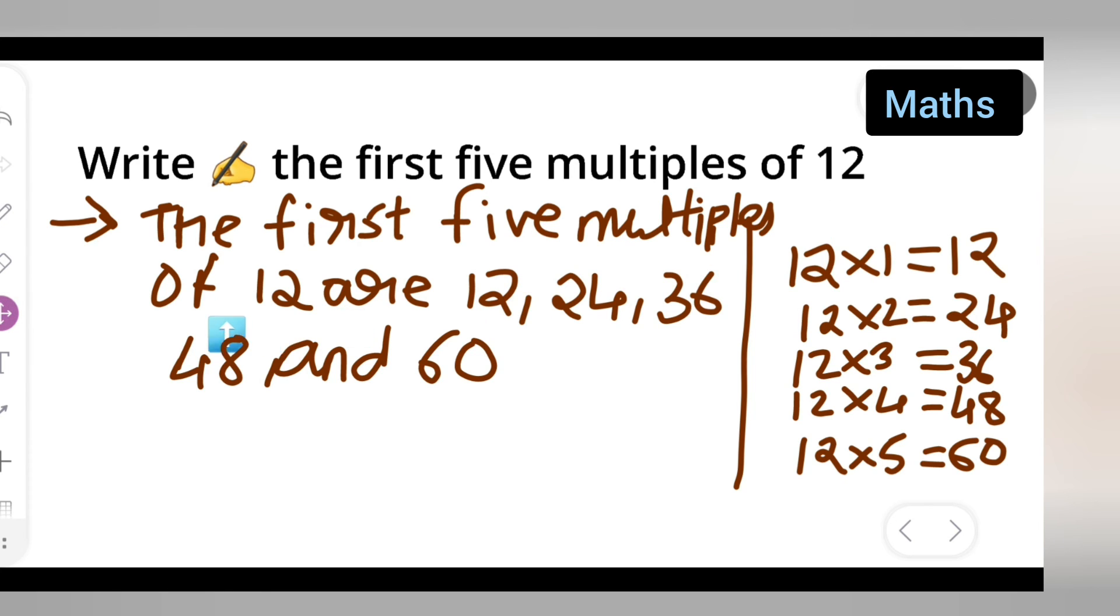So here are the first five multiples: 12, 24, 36, 48, and 60.